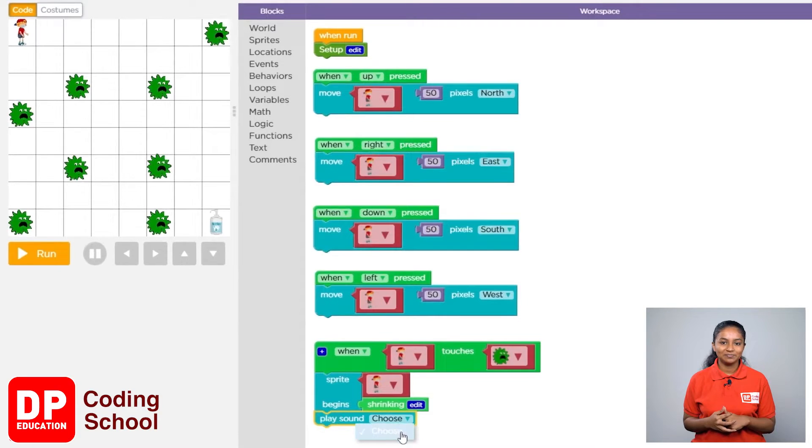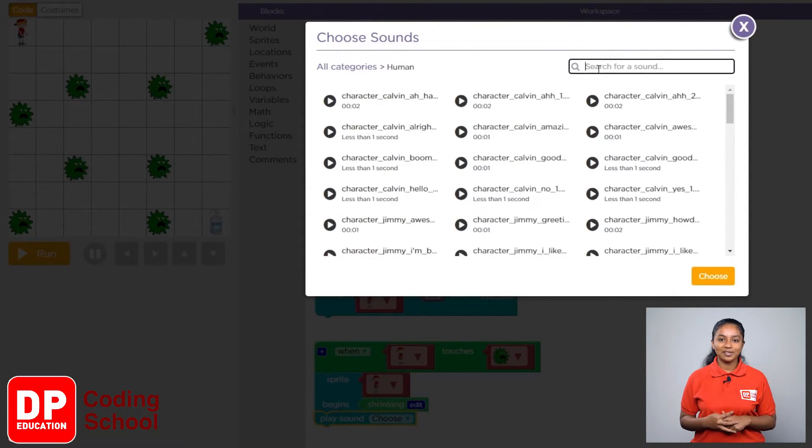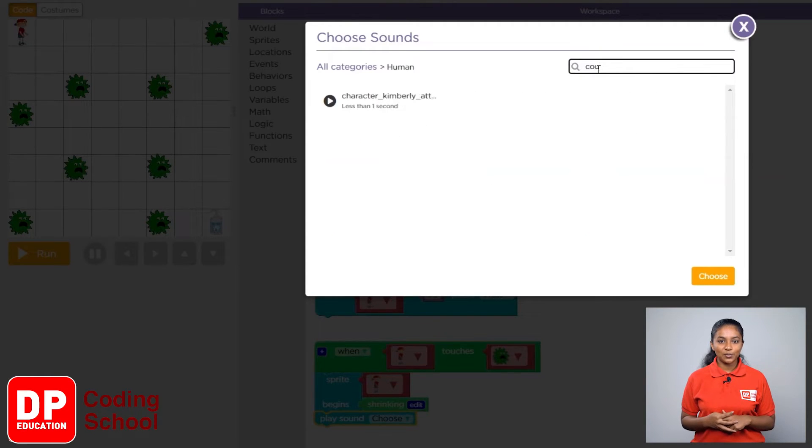Click on choose button. Click on human and type cough in the search bar. C-O-U-G-H cough. Click on character underscore Kimberly underscore attention underscore fight. Click on the yellow color button called juice.